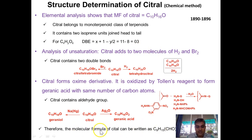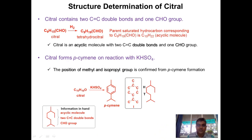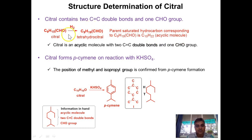The molecular formula of citral can therefore be written as C9H15CHO. The hydrogenation product is tetrahydrocitral, and the parent saturated hydrocarbon corresponding to the fully reduced product is C10H22, which corresponds to the formula CnH2n+2. This confirms that citral is an acyclic molecule. So citral is acyclic, contains two carbon-carbon double bonds, and contains one CHO group.